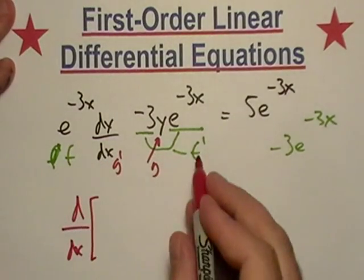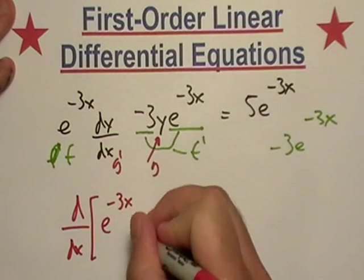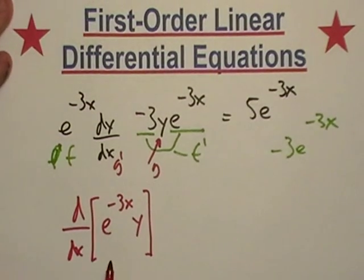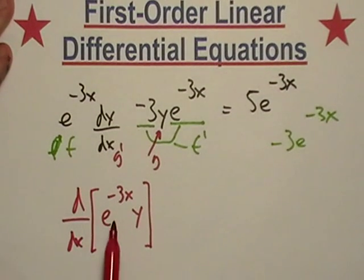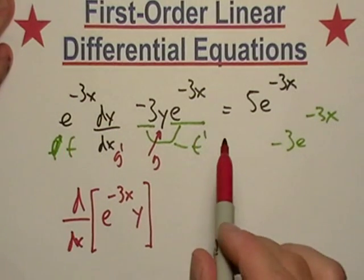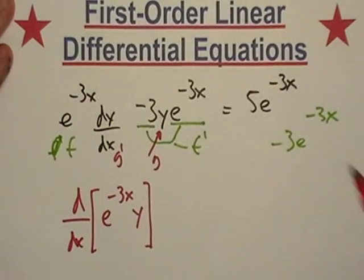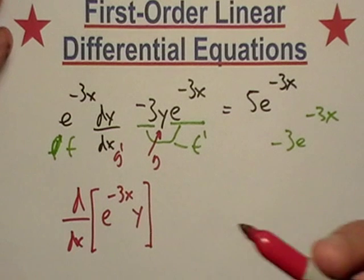It would look like this. See, if I took the derivative of this, this e to the negative three x times y, I would get this right here. I would get the product rule. It might be on the other side, but you can flip the product rule around all you want to; it's still the product rule because it's multiplication and addition.